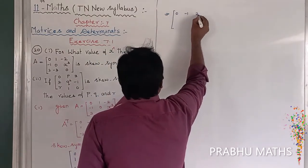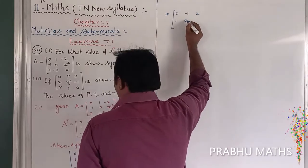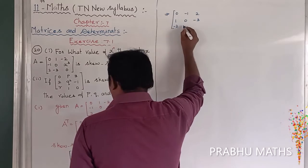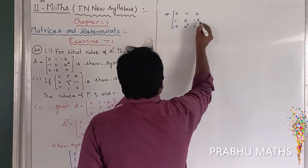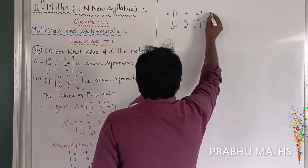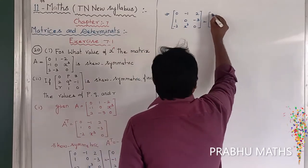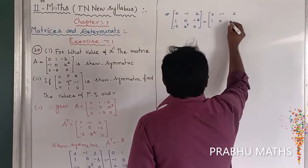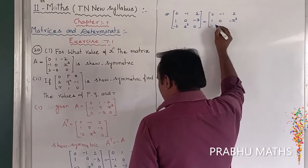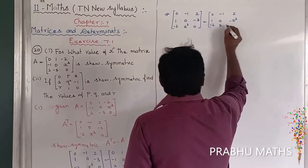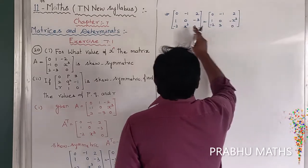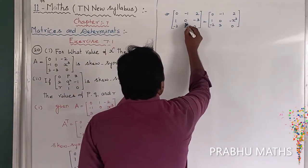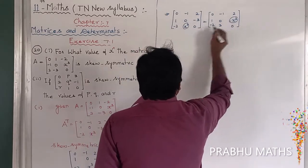So equating the two matrices: the left side is 0, minus 1, 2; 1, 0, minus 3; minus 2, X cubed, 0. The right side after multiplication is 0, minus 1, plus 2; 1, 0, minus X cubed; and minus 2, 3, 0. Now equating the corresponding entries to find the X value.